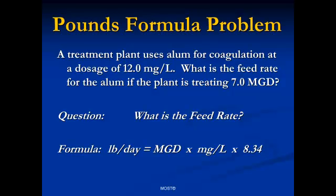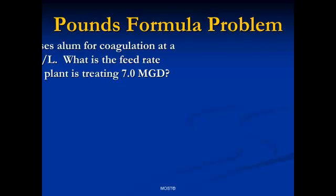So now we need to look and see — do we have the flow rate in MGD? Yes, we do. It's given to us right here in the problem: 7 MGD is our flow rate. What about the second variable, the mg per liter? Yes, we also have that — 12 mg per liter is our required dosage rate. Now it's time to go ahead and calculate our answer, plugging these bits of information in.